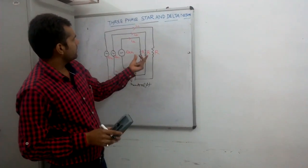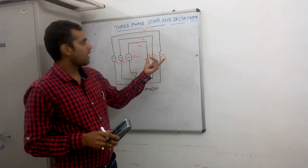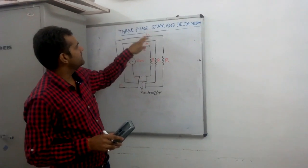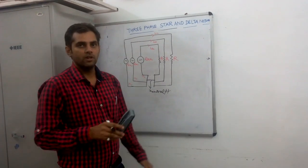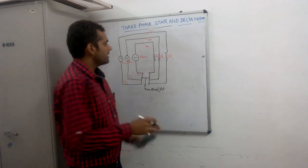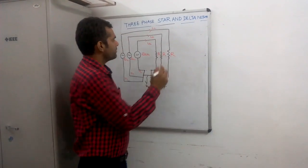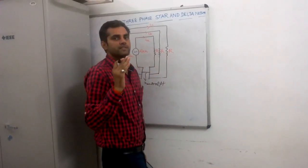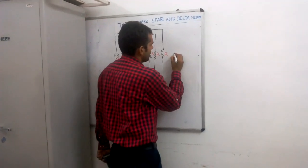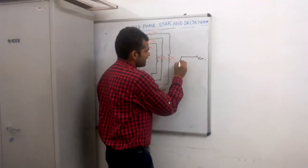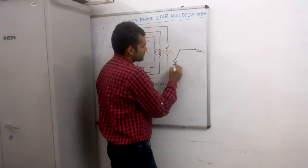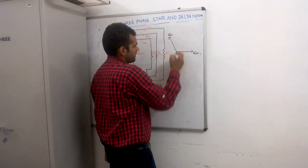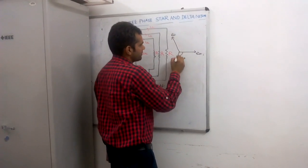If the load resistance R is the same for every phase, then the sum of instantaneous currents Ia + Ib + Ic is equal to 0. Another important property of the 3-phase system is that every phase should have a 120-degree phase shift with respect to each other. So we have Ea here, Eb will lag Ea by 120 degrees, and Ec will lag Eb by 120 degrees.